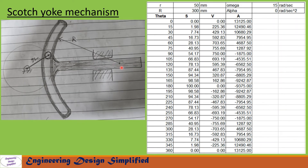After having derived all the necessary equations, let us now solve a problem using Microsoft Excel. In this problem: crank length r = 50 mm, radius of the guide R = 300 mm, angular velocity ω = 15 rad/s, and angular acceleration α = 0 rad/s². In this column we have written theta from 0 to 360 degrees at intervals of 15 degrees. We have calculated plunger displacement in mm, plunger velocity in mm/s, and acceleration of the plunger in mm/s².